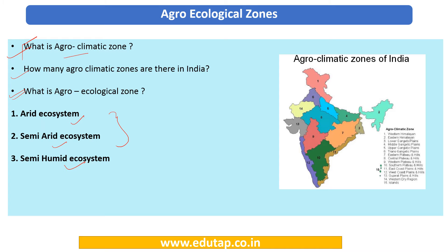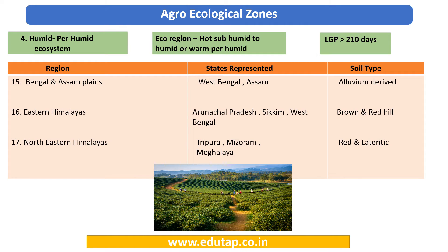Our fourth ecosystem is the humid per-humid ecosystem. The eco-region bio-climate here is hot sub-humid to warm per-humid — per-humid being the climate with excess humidity. The length of growing period (LGP) for this zone is 210 days. LGP, eco-region, and soil type are the three important parameters from an examination point of view.